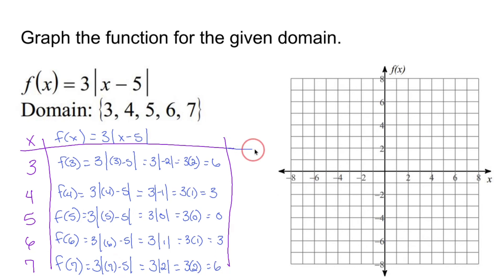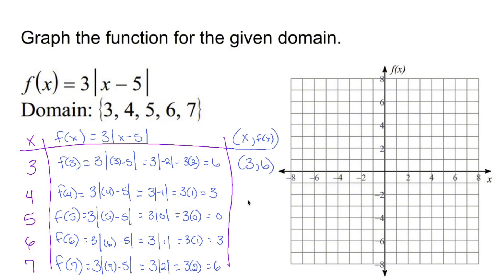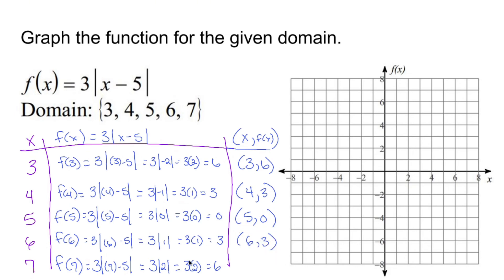Back over here in this chart, those are my x and f of x values. When I graph them I have five ordered pairs: I plugged in three and got six, giving me the point (3, 6). I plugged in four and got three: (4, 3). I plugged in five and got zero: (5, 0). I plugged in six and got three: (6, 3). And I plugged in seven and got six: (7, 6).